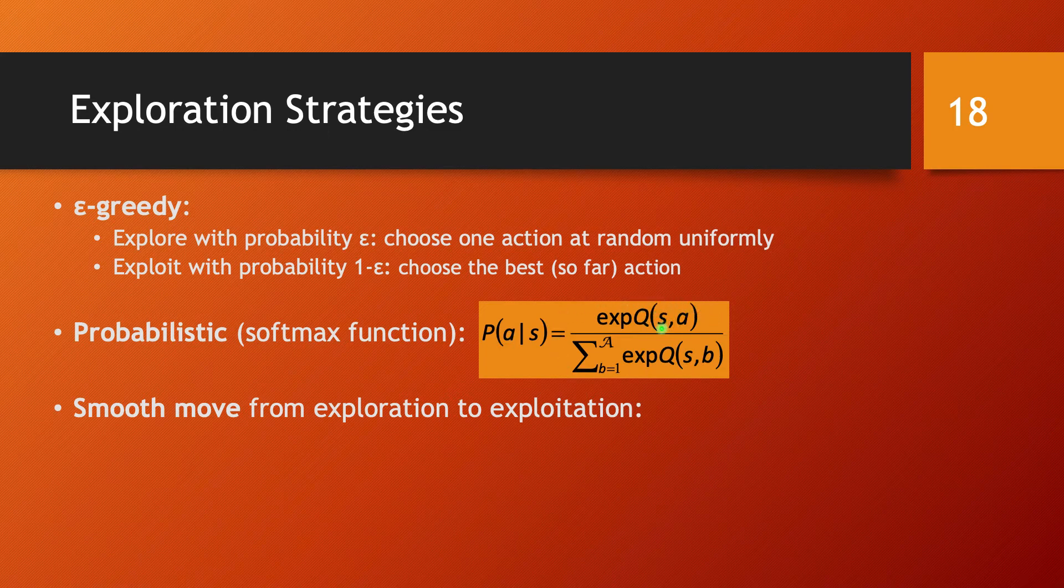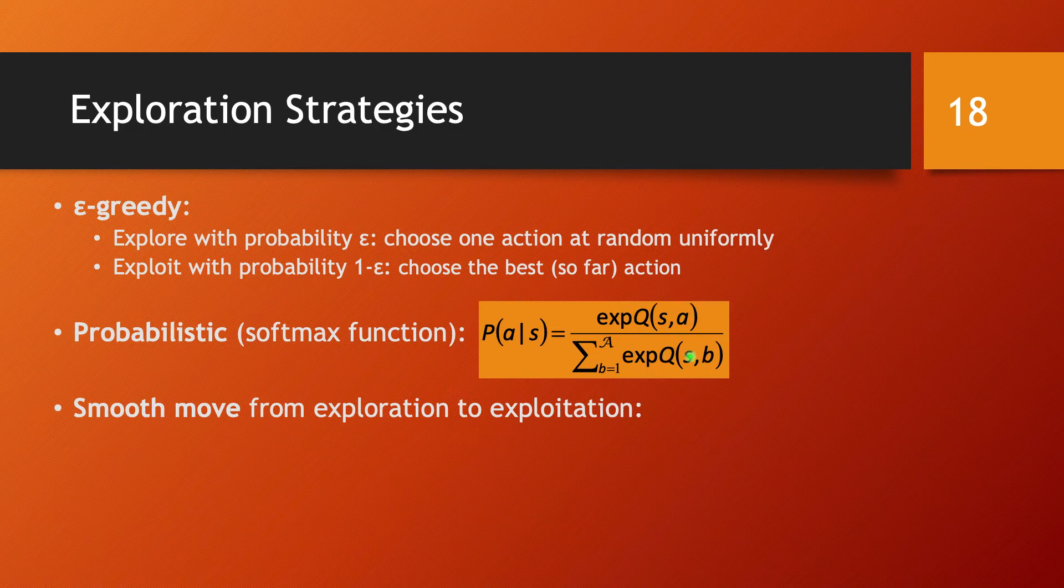We have the internal rewards or partial information about these internal rewards on state S with action A. And we combine all of these internal rewards into these probabilistic values via the softmax function.